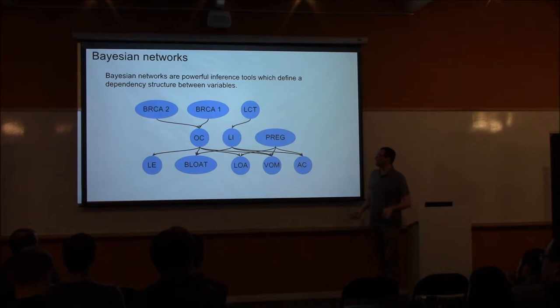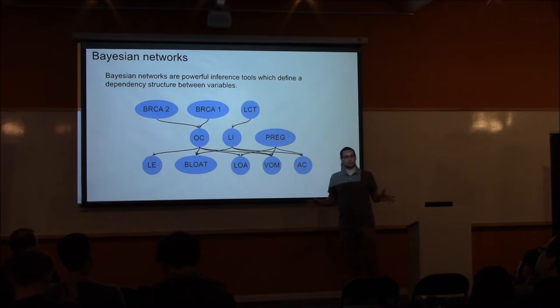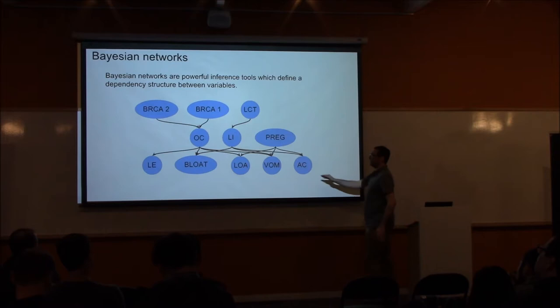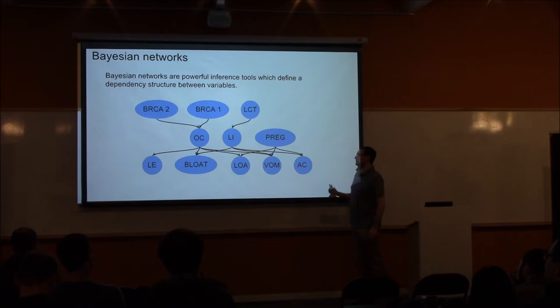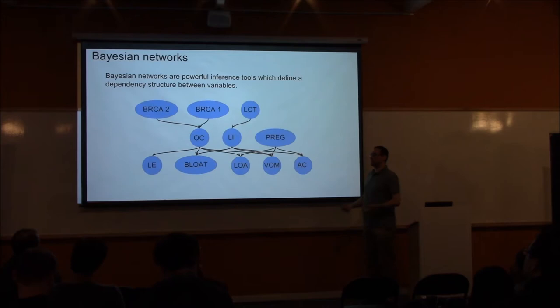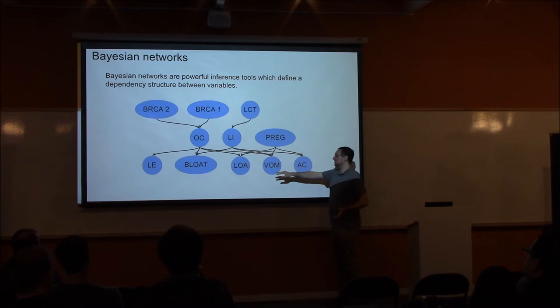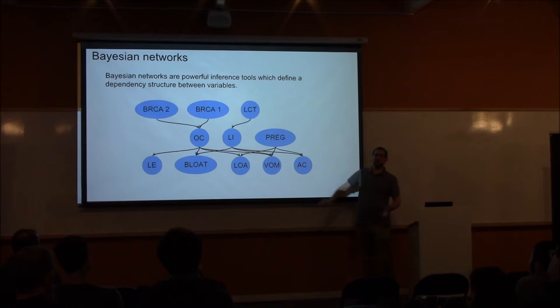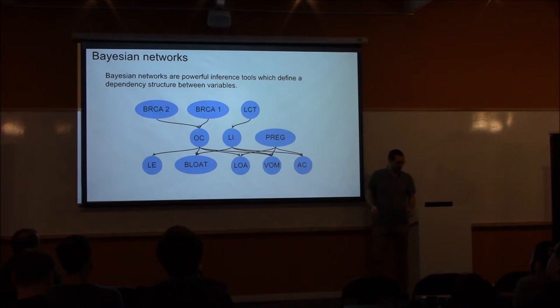Here is an example of a diagnostic network. It has three layers — not to be confused with a neural network's layers. On the bottom we have symptoms: low energy, bloating, loss of appetite, vomiting, and abdominal cramps. In the middle we have three conditions: ovarian cancer, lactose intolerance, and pregnancy. On the top we have three genetic conditions: mutations in BRCA1 or BRCA2 genes, and a mutation in the LCT gene. These dependencies make sense — having a mutation in the LCT gene is very predictive of lactose intolerance. The edge directions also make sense: it's not that vomiting indicates pregnancy, it's that pregnancy indicates vomiting. That's the flow of inference you want to model.